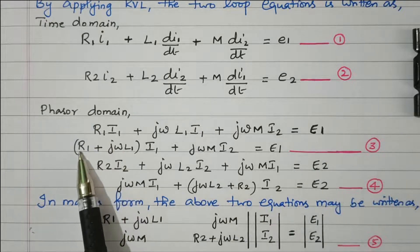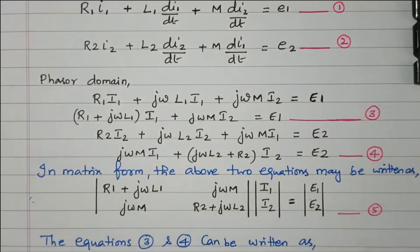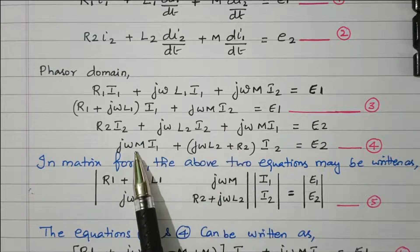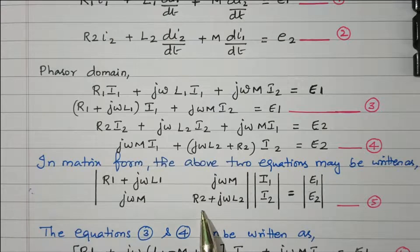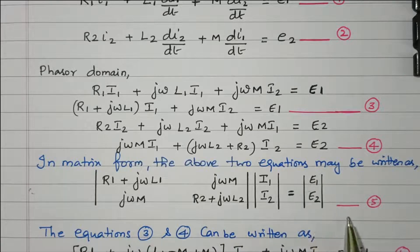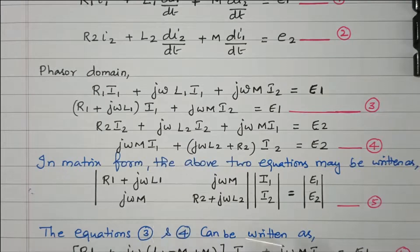So we now have equations 3 and 4 in simplified phasor form. Equation 3 has I1 and I2 terms; equation 4 similarly has I1 and I2 terms. Based on that, we can write them in matrix format: [(R1 + jω·L1), jω·M; jω·M, (R2 + jω·L2)] · [I1; I2] = [E1; E2]. This is the impedance matrix form — equation 5.